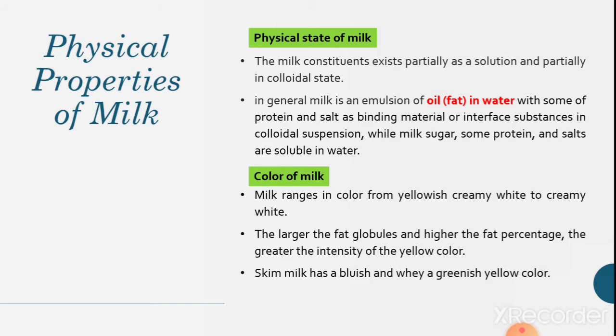While milk sugar, some protein and salts are soluble in water. Color of milk: milk ranges in color from yellowish creamy white to creamy white. The larger the fat globules and higher the fat percentage, the greater the intensity of the yellow color. Skim milk has bluish and very greenish yellow color.